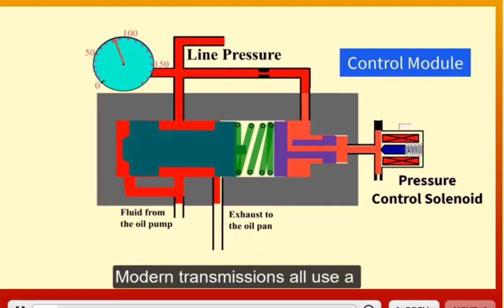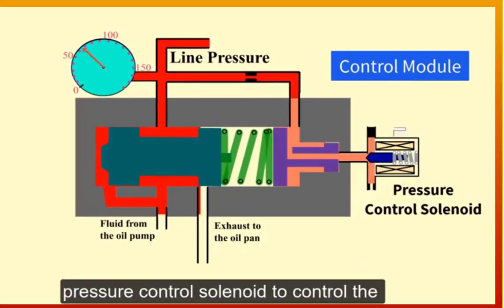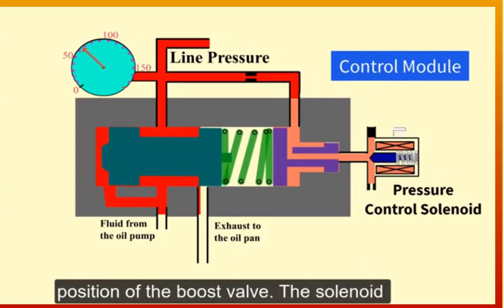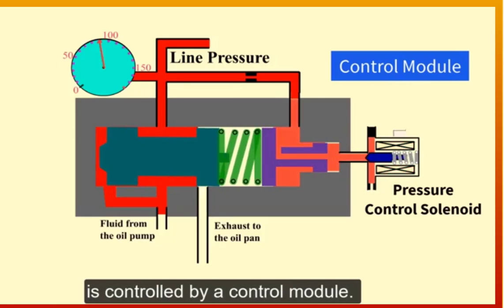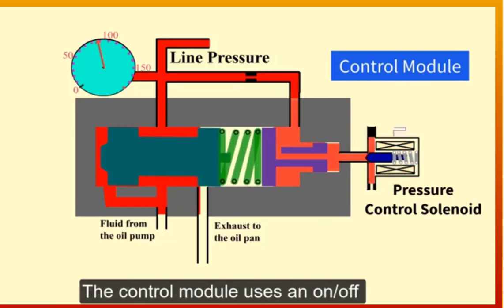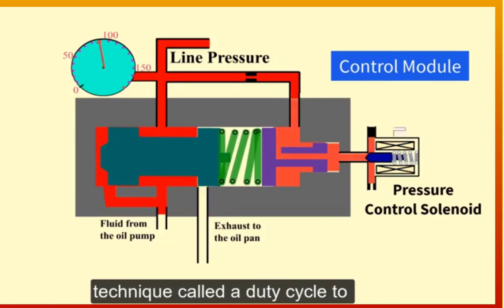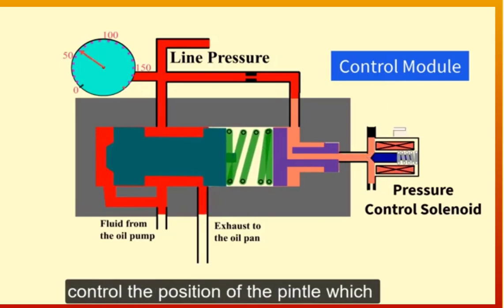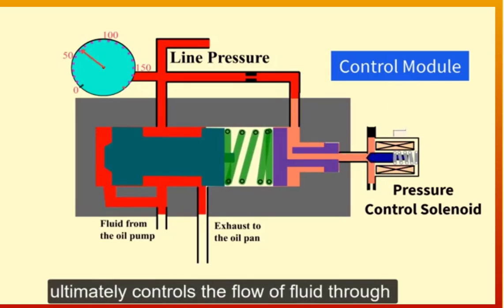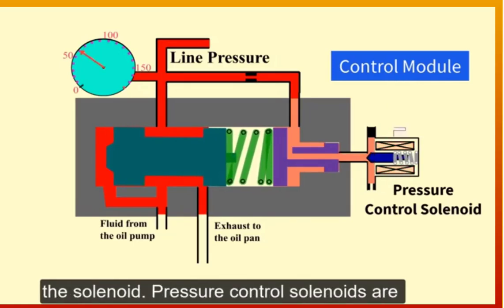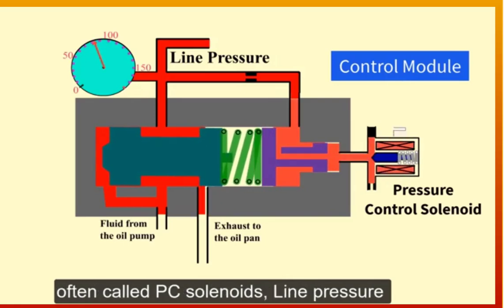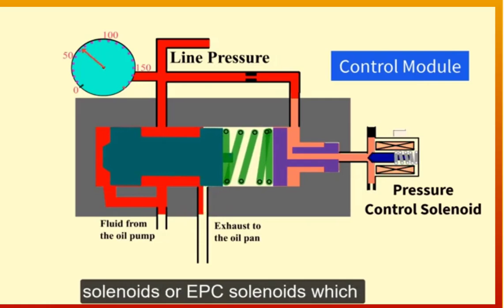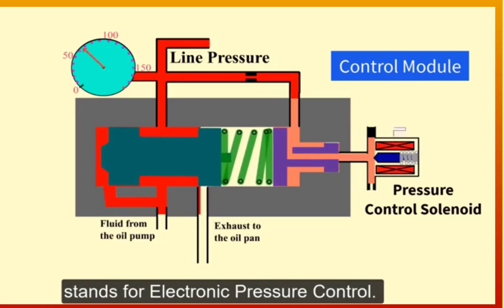Modern transmissions all use pressure control solenoids to control the position of the boost valve. The solenoid is controlled by a control module. The control module uses an on-off technique called a duty cycle to control the position of the pintle, which ultimately controls the flow of fluid through the solenoid. Pressure control solenoids are often called PC solenoids, line pressure solenoids, or EPC solenoids, which stands for electronic pressure control.